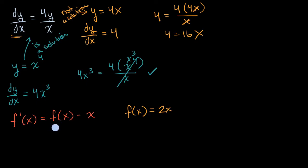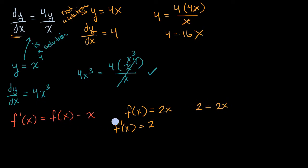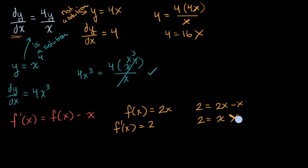To figure that out, we need to find f prime of x, which is just equal to two. Then we test the equality: is two — f prime of x — equal to f of x minus x, which is two x minus x? That gives us two is equal to x. You might be tempted to say you've solved for x, but this tells us it's not a solution, because this needs to be true for any x in the domain of the function.